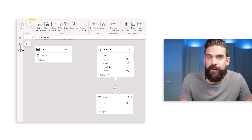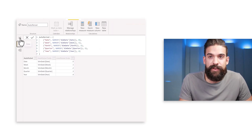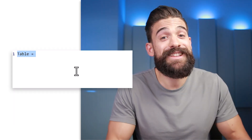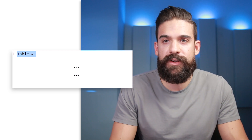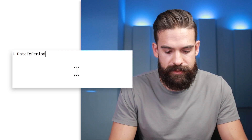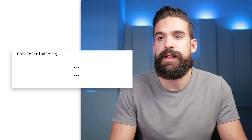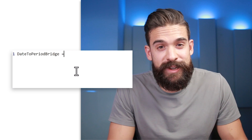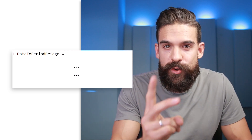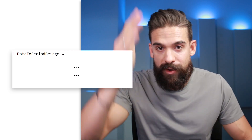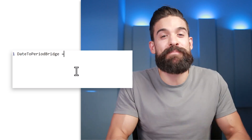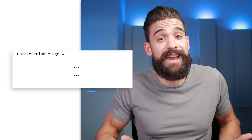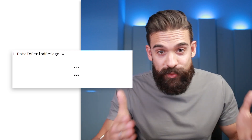If you're on the latest version of Power BI you can create the new table from the modeling view; otherwise go to the data view or report view and click New Table. Let's call this table 'date to period bridge'. This table will have two columns: the first with all the dates, and the second — the special one — where we define which period breakdown we want.